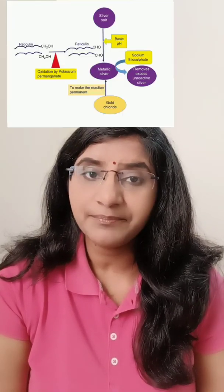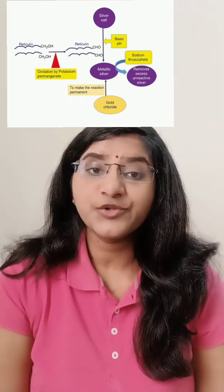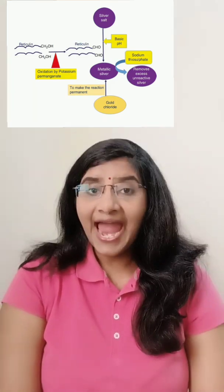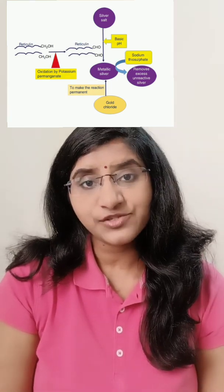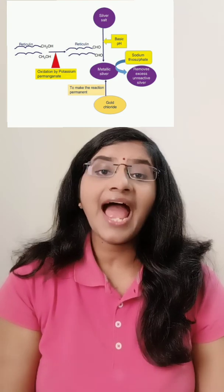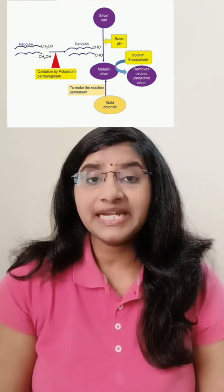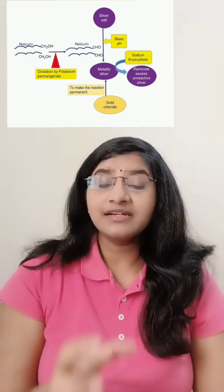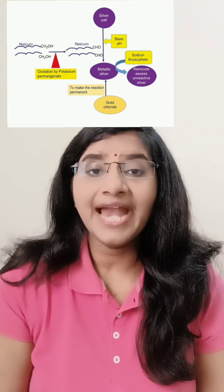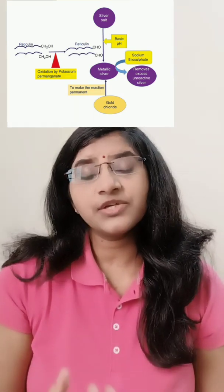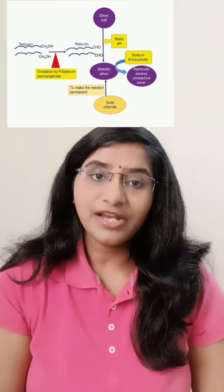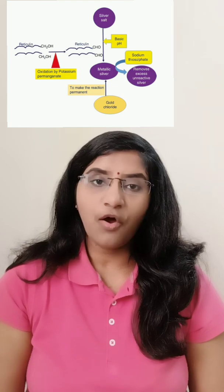So what is the principle of this reticulin stain? Reticulin is a type 3 collagen, so it will have a carbohydrate group in it. The carbohydrate group contains a CH2OH group, that is an alcohol group. When we add an acid, the alcohol group will oxidize and give rise to an aldehyde group. This aldehyde group, in the presence of basic pH, when you add a silver solution, the silver salts will precipitate and give rise to metallic silver. That silver precipitate is made permanent by adding gold chloride, which acts as a toner, increasing the intensity of the stain and making it permanent. Whatever excessive unreacted silver salts remain are then removed by sodium thiosulfate solution.